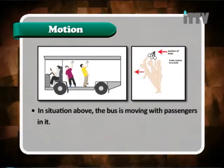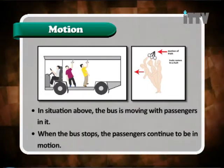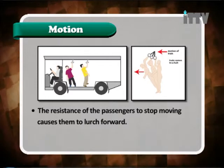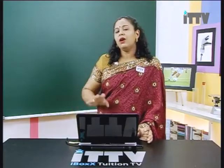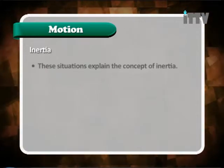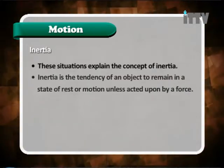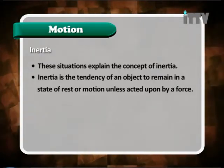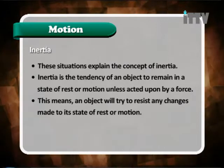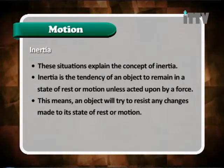In the next situation, the bus is moving with passengers in it. When the bus stops, the passengers continue to be in motion. The resistance of the passengers to stop moving causes them to lurch forward. These two situations show that there is a resistance to a change that occurs. Inertia is the tendency of an object to remain in a state of rest or motion unless acted upon by a force. This means an object will try to resist any changes made to its state of rest or motion.